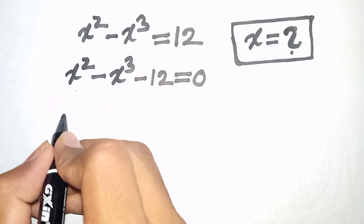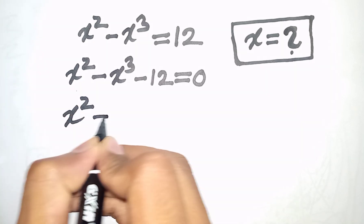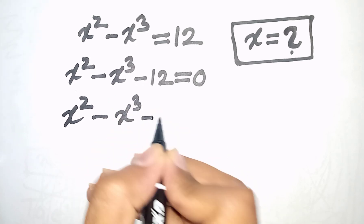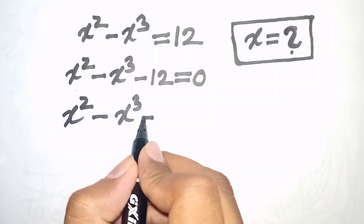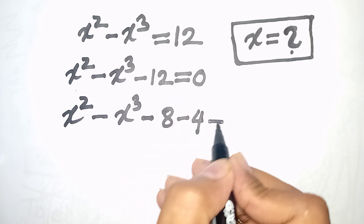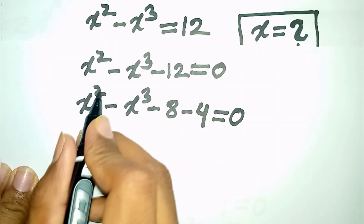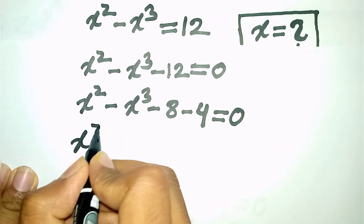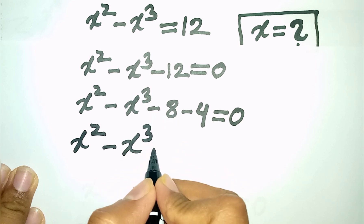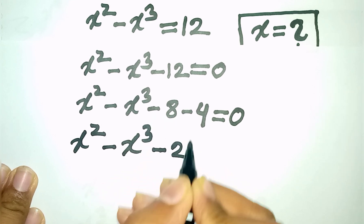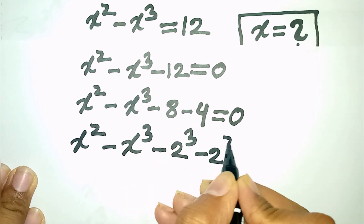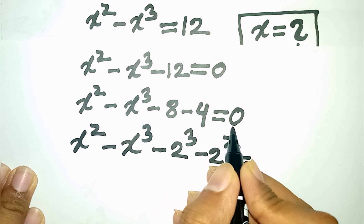We can write here x² - x³, then minus 12 is the same as minus 8 minus 4, so x² - x³, then minus 8 is the same as -2³, then minus 4 is the same as -2², equals 0.